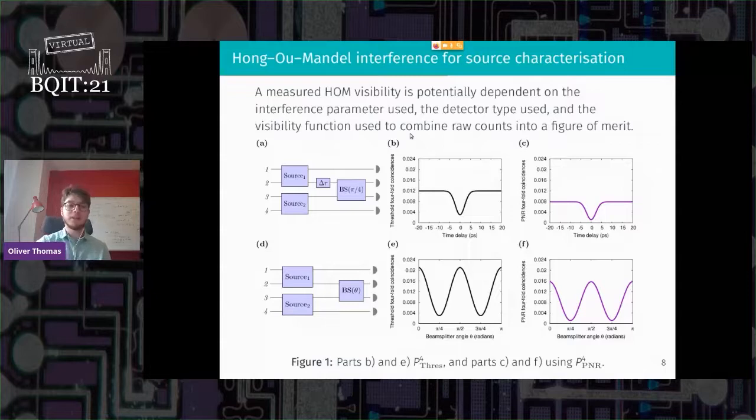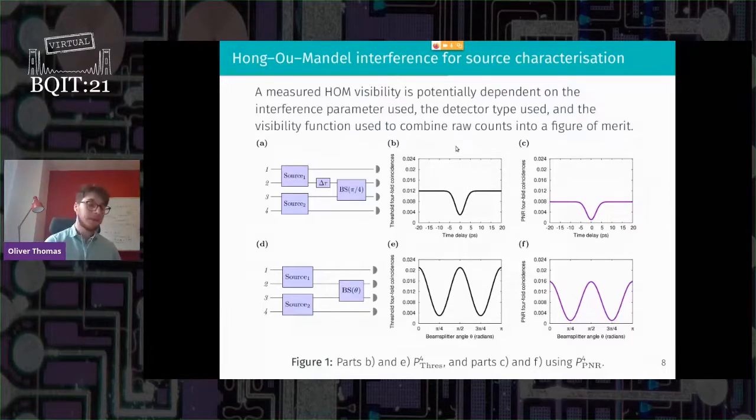And then point two is we talked about the different detector types you can use. So there's threshold detectors, which are these black lines. So they don't distinguish higher photon numbers. It's either vacuum or a click. And then there's number resolving detectors. And here we look at just the one photon in each mode probability, so like P1111. So here this HOM dip is slightly beyond the low power limit, which is why there's a separation. So the state is generating higher than single photons and the threshold detectors kind of over counting. And then lastly there's the visibility function, which I'm not going to talk about here, but it's in the paper.